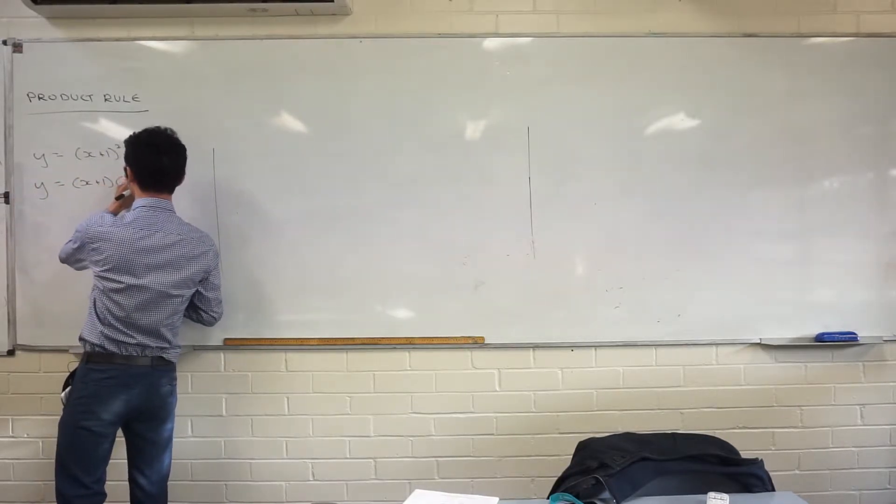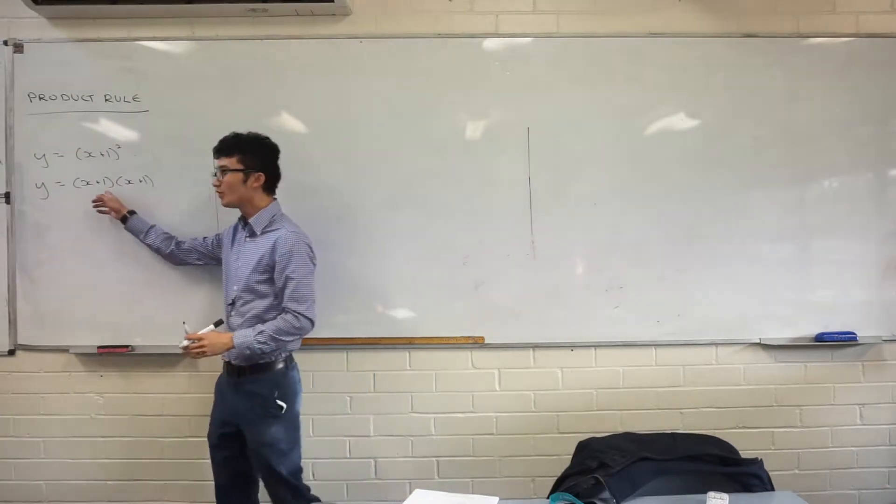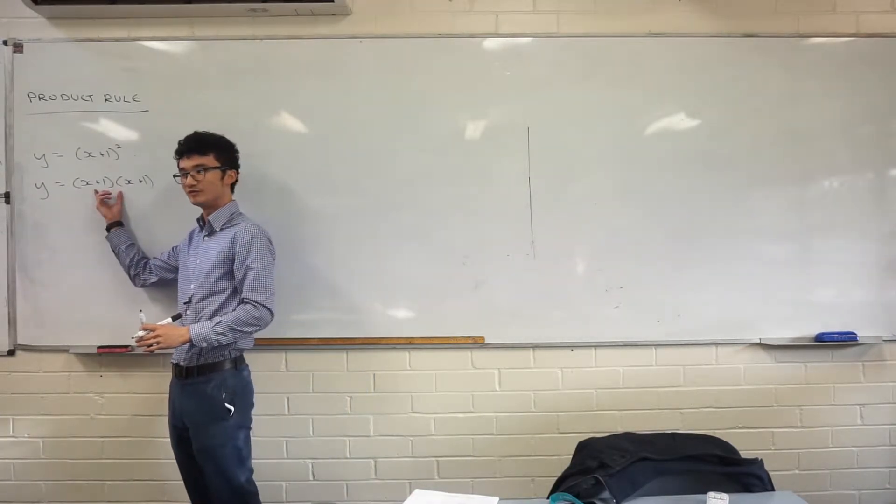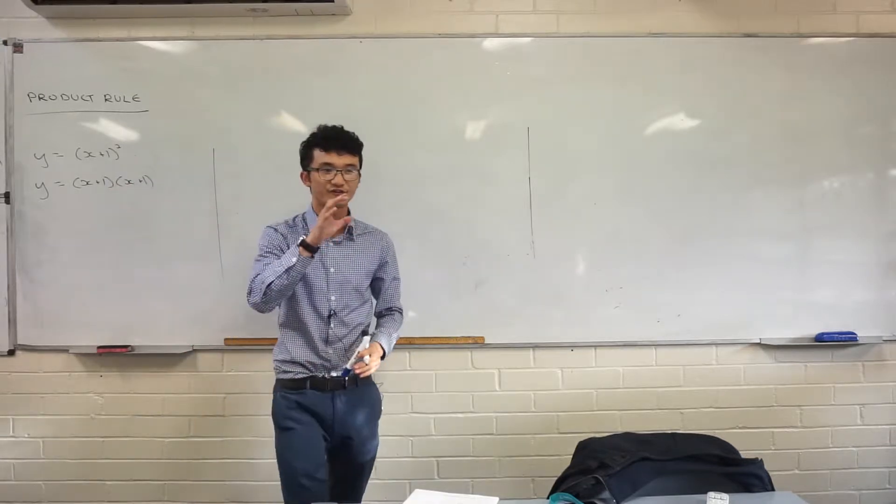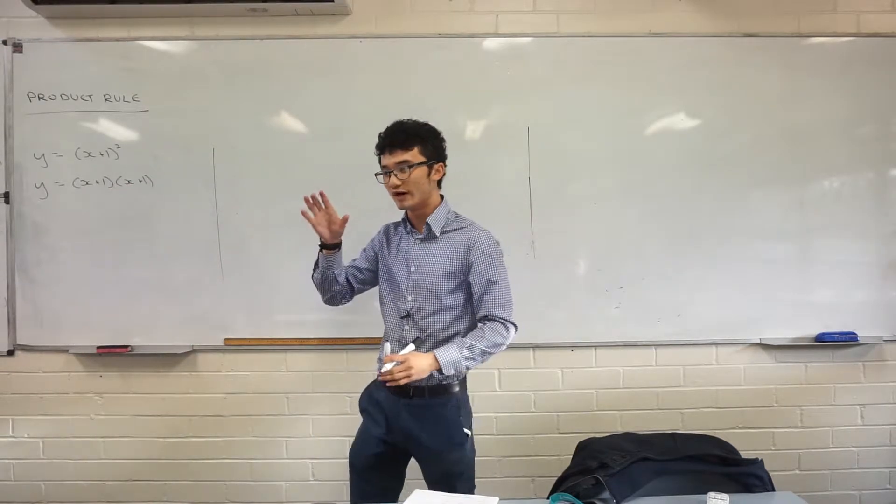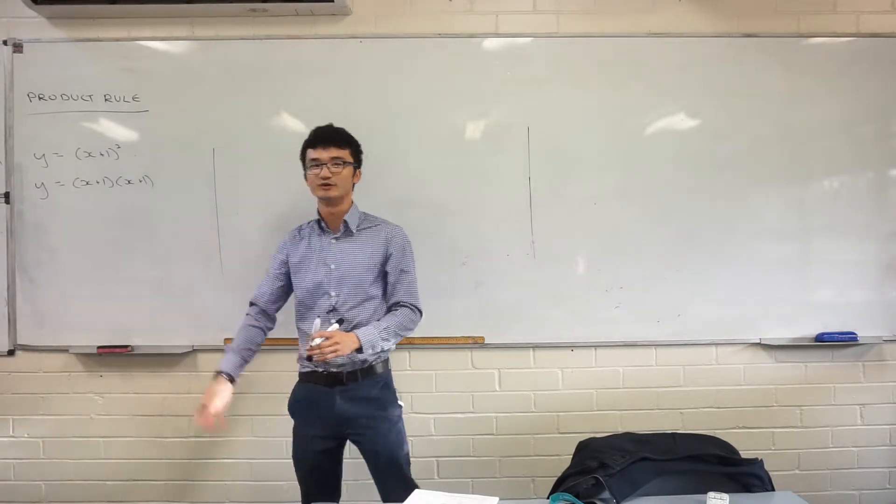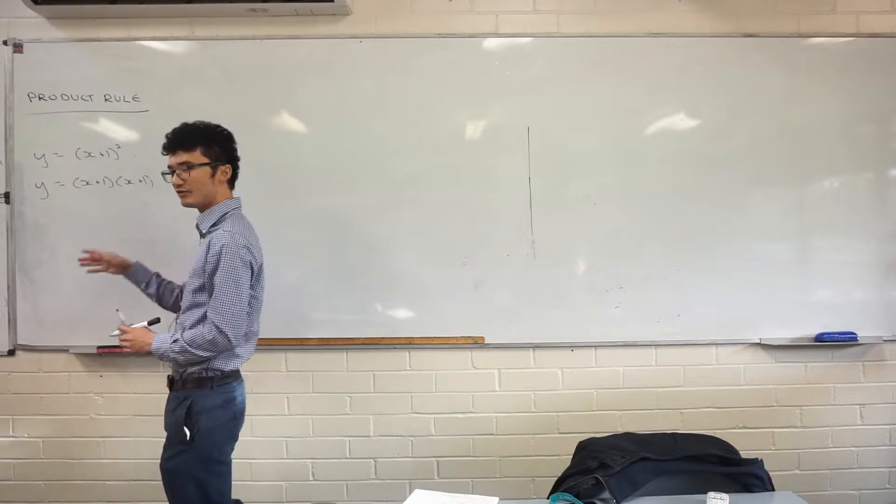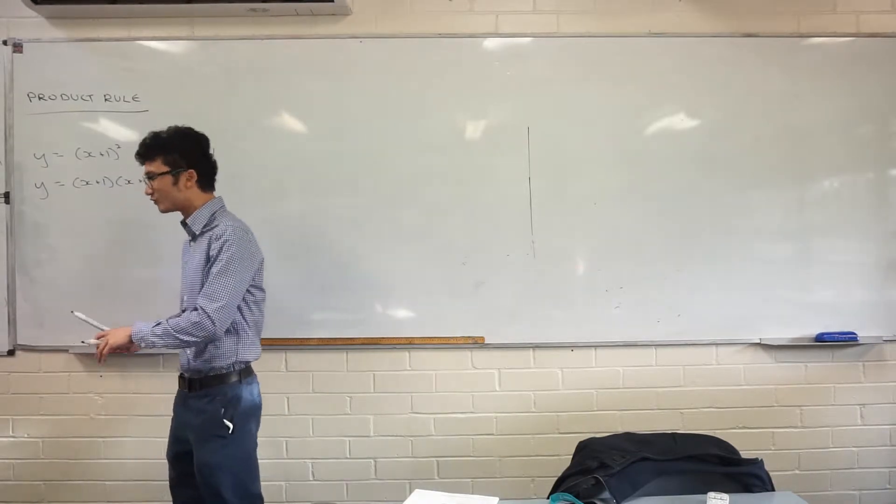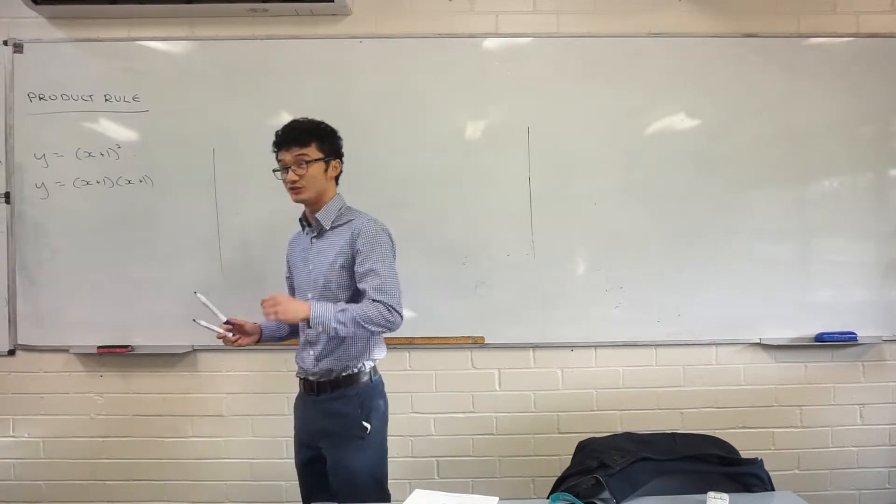Right. x plus 1 all squared is x plus 1 times x plus 1. But there was a problem with differentiating things in this form. I said that we can't differentiate things when I have the product of two functions. That was something that we didn't have the tools available to do. But now we do.